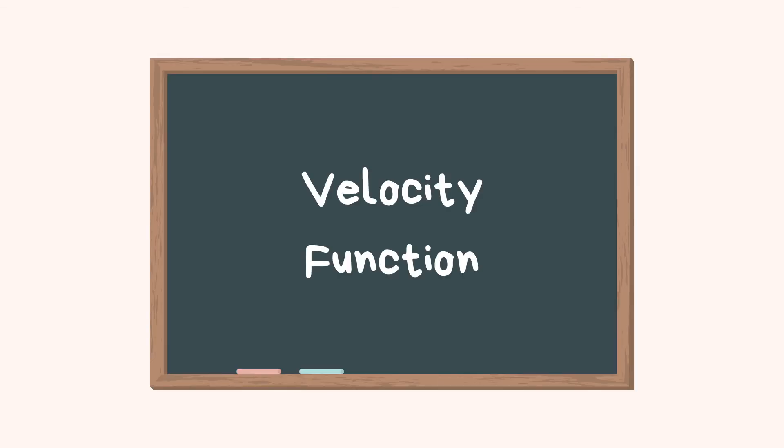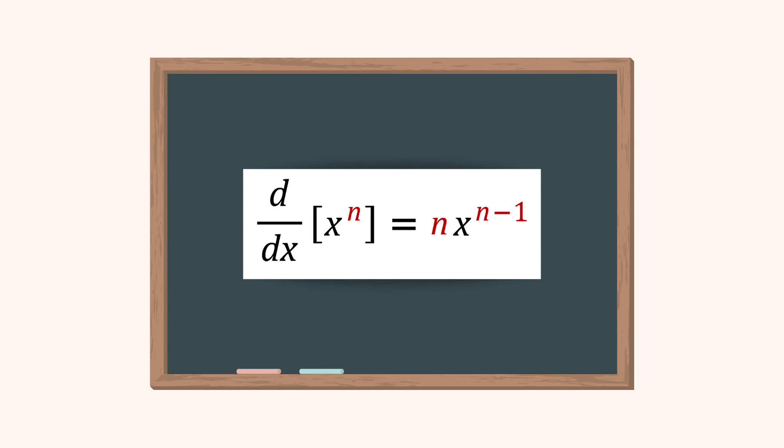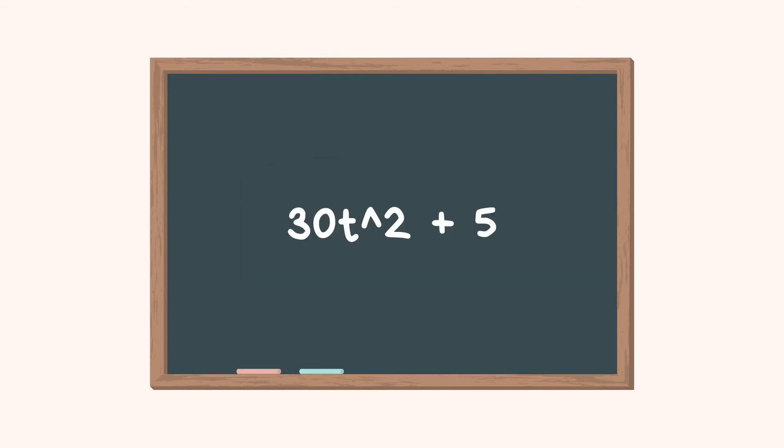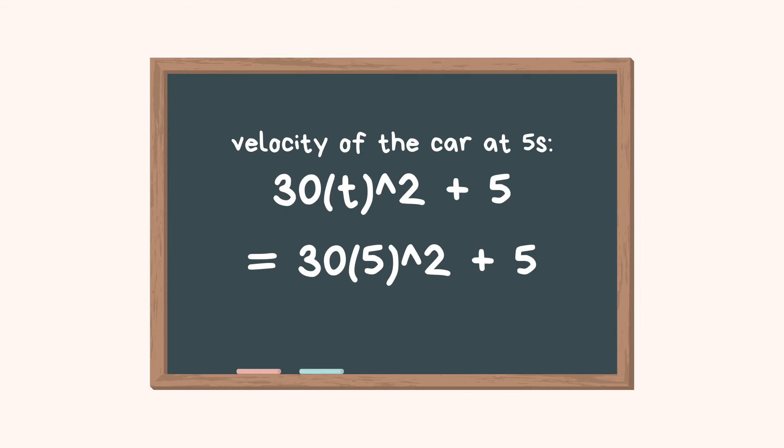Firstly, we need to find the velocity function, which is given by the derivative of the displacement function. And to do this, we use the power rule that I explained before to get the velocity function, and we should get this equation. Then, to find the velocity of the car at 5 seconds, we just have to insert the value and finally get the velocity of the car, which is 755 meters per second.